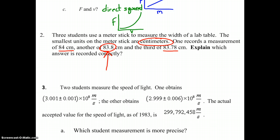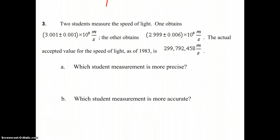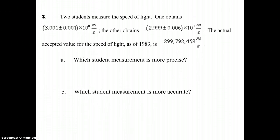Lastly, number three. Two students measure the speed of light. One obtains 3.001 plus or minus 0.001 times 10 to the eighth meters per second. The other obtains 2.999 plus or minus 0.006 times 10 to the eighth meters per second. The accepted value for the speed of light, as of 1983, is 299,792,458 meters per second.